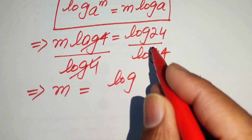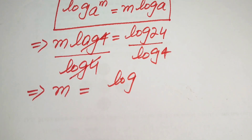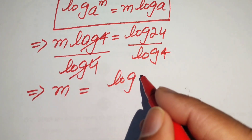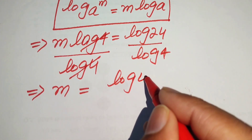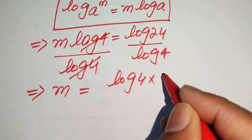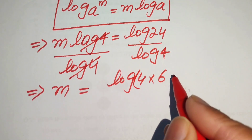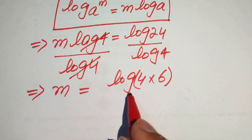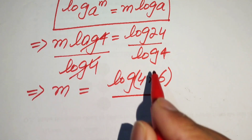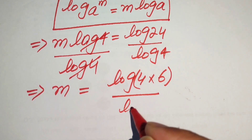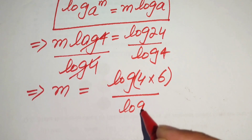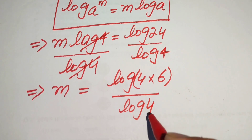We write 24 as 4 times 6 — since 4 times 6 equals 24 — and this is divided by log 4.